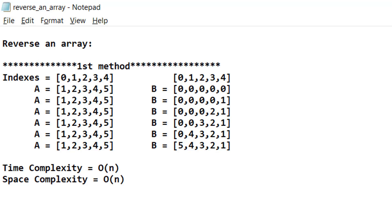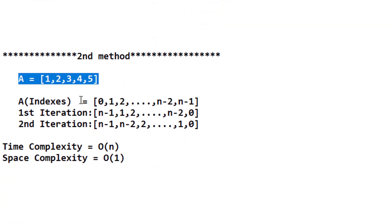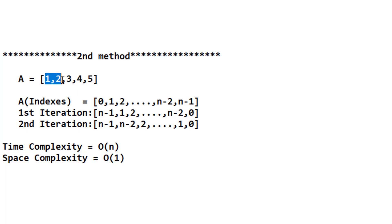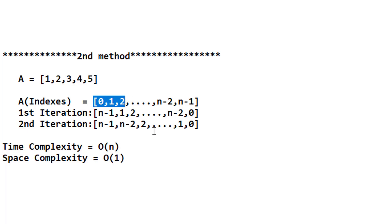In the second solution we optimize space complexity. Given array A, we simply swap elements in place: the first element is swapped with the last, the second with the second last, and so on. We only iterate till n/2 elements. For example, at index zero we swap with the last element, at index one with the second last, and the middle element (index two in a size-5 array) need not be swapped because it is already in the correct position.